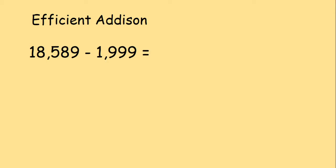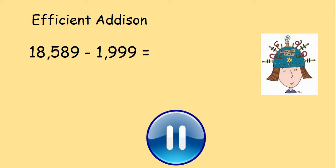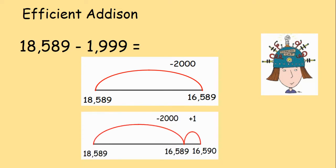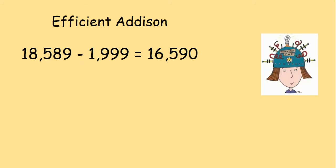We're going to have one more go because that one was a little bit tricky. Your question is 18,589 subtract 1,999. Press pause now to work out the answer and then press play once you are ready. Brilliant. Again, I would need to use a number line. I would take 2000 away from 18,589. And then I would add one back. My answer would be 16,590.